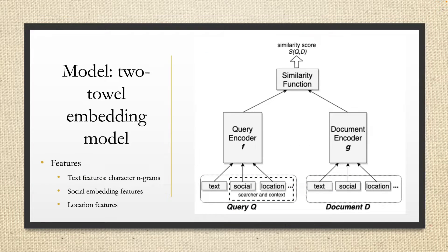For model selection, Facebook uses a two-tower embedding model. The input features include text features, social embedding features, and location features. In the text features, it uses character n-grams instead of word n-grams to increase similarities. We can see on the right side of the picture: for the query, it calculates the embedding, and for each document it also calculates the embedding. At last, it uses a similarity score to determine if the query is similar to the documents.